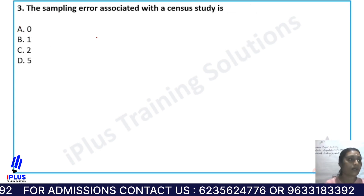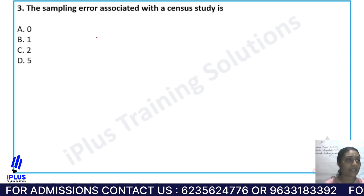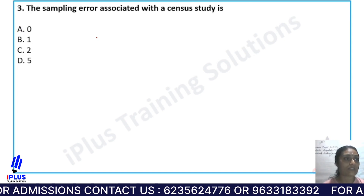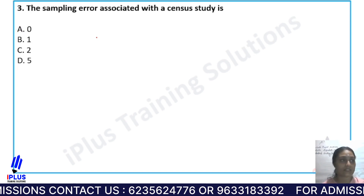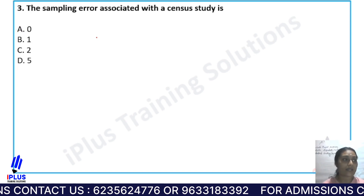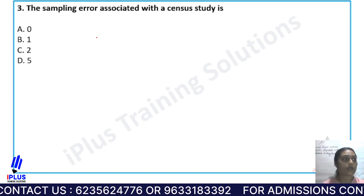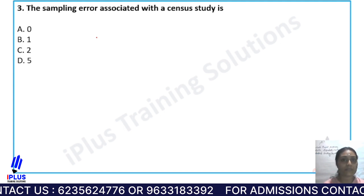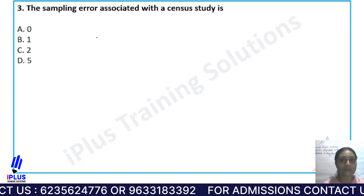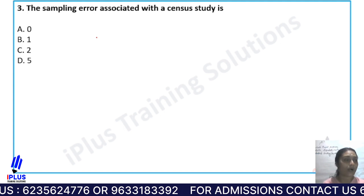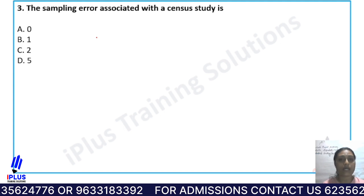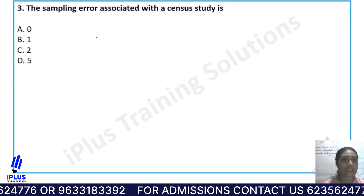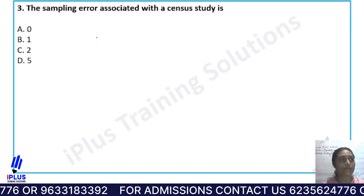Question 3: The sampling error associated with a census study is — Option A: 0, Option B: 1, Option C: 2, and Option D: 5.